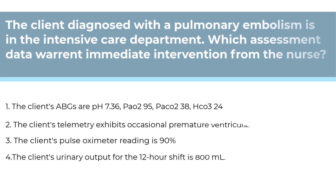Here's question number two. The client diagnosed with a pulmonary embolism is in the intensive care department. Which assessment data warrant immediate intervention from the nurse? Number one, client's ABGs are pH 7.36, PaO2 95, PaCO2 38, and HCO3 of 24. Number two, the client's telemetry exhibits occasional premature ventricular contractions or PVCs. Number three, the client's pulse oximeter reading is 90%. Number four, the client's urinary output for the 12-hour shift is 800 milliliters.